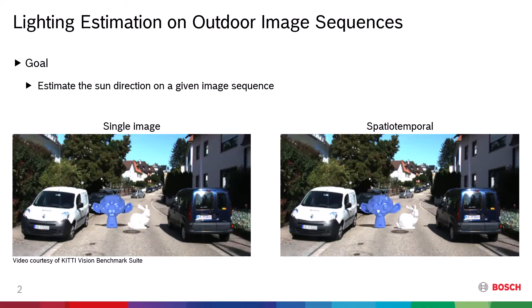The goal of this topic is to estimate the sun direction on a given image sequence. Obviously, the sun direction can be calculated from GPS coordinates and the timestamp, but if such information is not available, we need to figure out the lighting from the images.